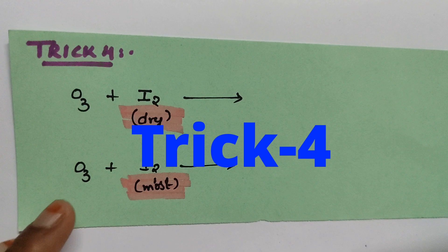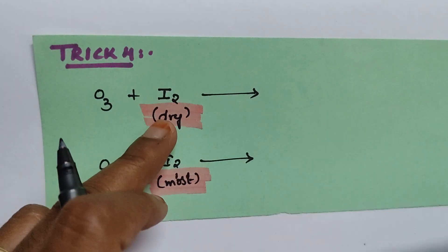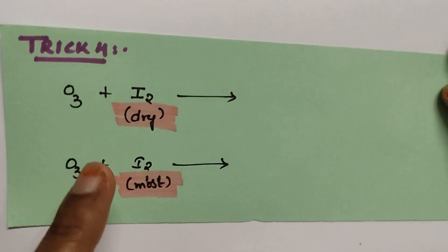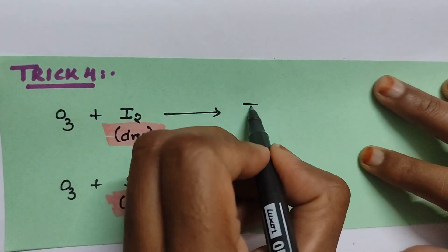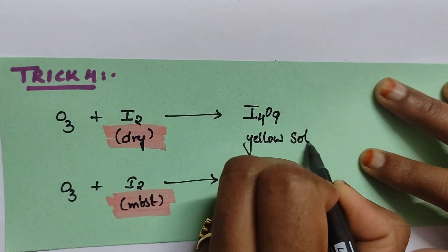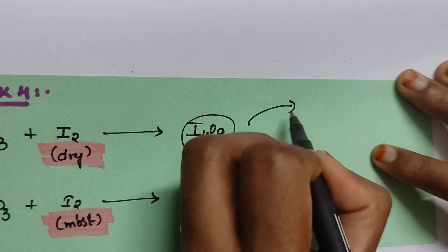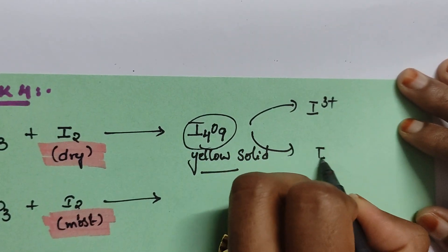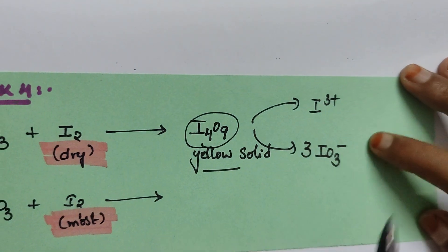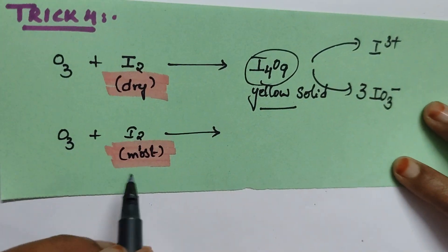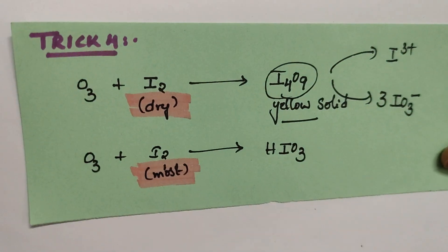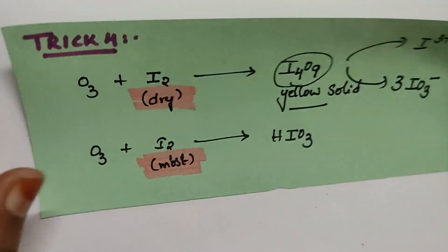Coming to trick number four: the reaction between ozone and dry iodine vs. moist iodine. When we treat ozone with dry iodine, we get a yellow color solid I4O9. If you observe, it contains two different units: I3+ and IO3−. To balance this, we keep three before it: I3+ IO3−. Coming to moist iodine reacting with ozone, we get iodic acid HIO3. The trick is just learning this clear difference.